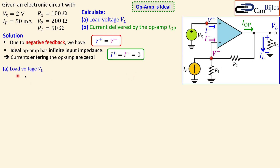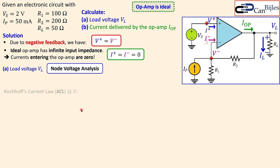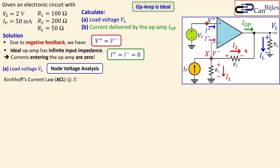The first question is to find the load voltage vL. There are many methods we can use — superposition is also possible because we have multiple inputs — but I will use node voltage analysis, which is faster in this case. Applying Kirchhoff's current law at node X, I assign current i1 going down and current iR2 going from left to right. Then I can say: ip produces i1 and i2 at node X.